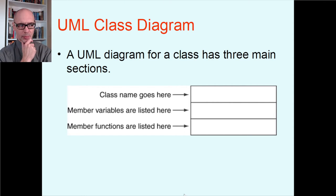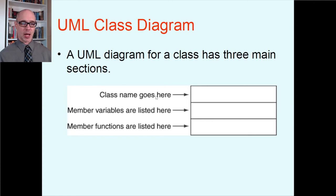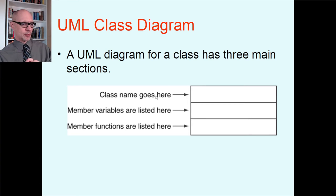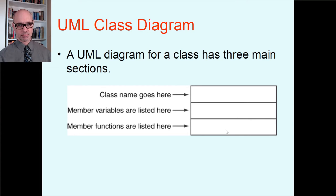Here is the UML class diagram we're going to be focused on. A UML diagram for a class has three main sections — an actual rectangle separated with lines. Up on top, the class name goes there. We always name our classes starting with a capital letter and make them singular. So a class name could be Book, Sword, or Button — singular, representing one single thing. The second section is where all your member variables are listed. The last section down at the bottom is where all your member functions are listed.